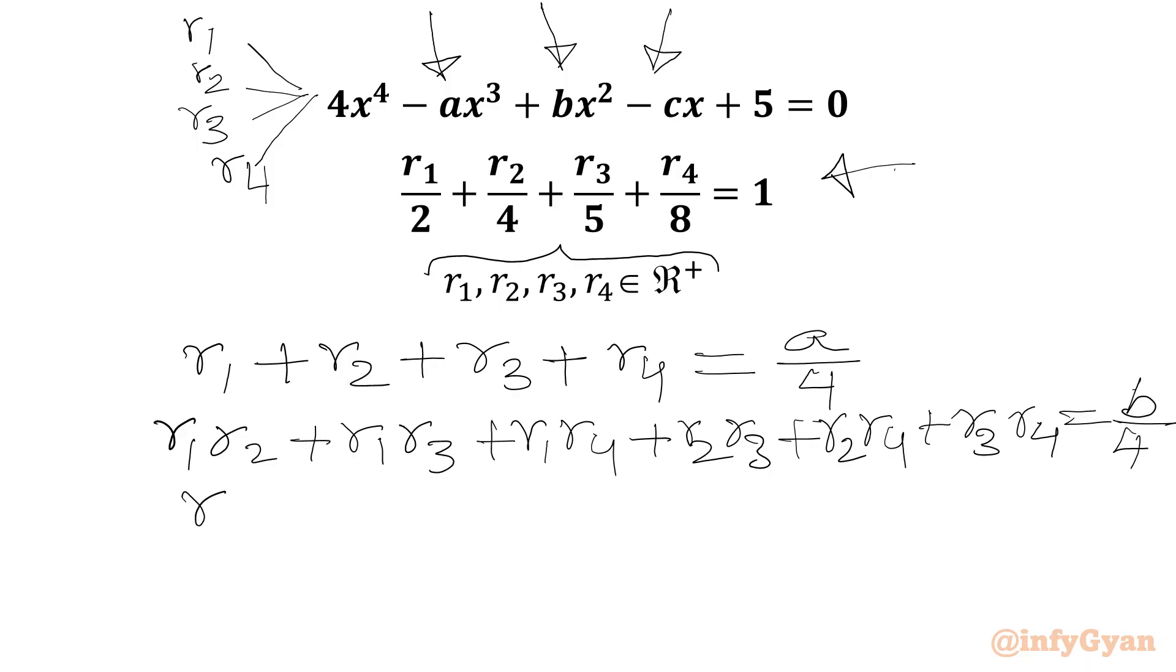Third equation we can write here sum of roots taken 3 at a time: R1R2R3 plus R1R2R4 plus R1R3R4 plus R2R3R4. Value will be equal to C over 4.